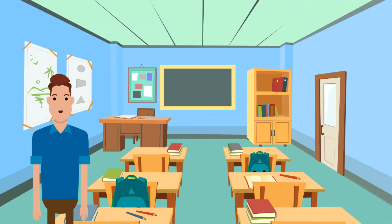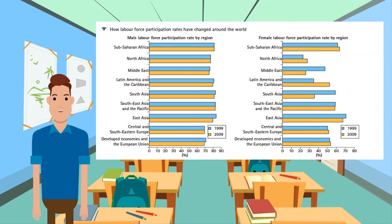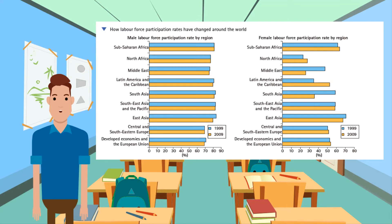What does the labor force participation rate look like? This graph shows the labor force participation rate in various parts of the world. On the left is the male participation rate; on the right is the female participation rate. Male participation rates have been falling — traditional male-dominated sectors such as mining and manufacturing industries have been shrinking, particularly in many developed countries.